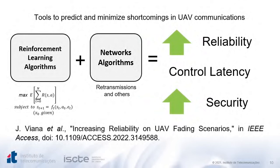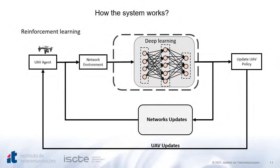What are the tools to predict and minimize shortcomings in UAV communications? We can use reinforcement learning algorithms, which provide a framework for learning to interact with the environment through experimentation, joined with network algorithms to recover from obstacles, interference, and attacks. One technique used to recover the system is an adaptation of packet combining presented in a published paper. We are now testing all the techniques with reinforcement learning. The UAV agent is added to the network environment where deep network techniques integrated with reinforcement learning algorithms estimate attacks, interference, and obstructions. After identification, recovery methods are applied, and the UAV also receives updates on network configuration.